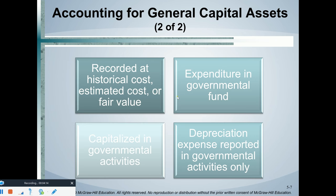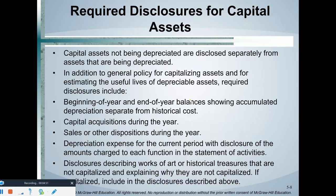Just like you saw in your other accounting classes, capital assets are typically recorded at historical cost. In the governmental fund we record the expenditure, but in the government-wide statements we capitalize up front when we buy or construct the fixed asset and depreciate it over its useful life. The government-wide statements use accrual accounting, very similar to what you learned in other accounting classes. Recording the expenditure up front is a modified accrual concept — this is new for the governmental funds.